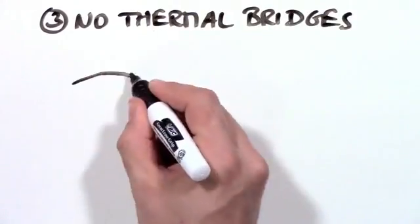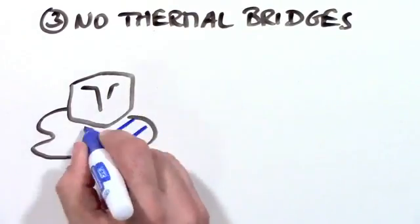3. No thermal bridges. A thermal bridge is like a road for heating energy in which warmth can travel right through your walls. As a matter of fact, most of our houses have thermal highways in our walls where heat can easily travel to the outside.